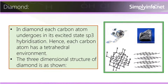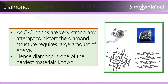In diamond, each carbon atom undergoes sp3 hybridization in its excited state. Hence, each carbon atom has a tetrahedral environment. The three-dimensional structure of diamond is as shown. As C-C bonds are very strong, any attempt to distort the diamond structure requires a large amount of energy. Hence, diamond is one of the hardest materials known.